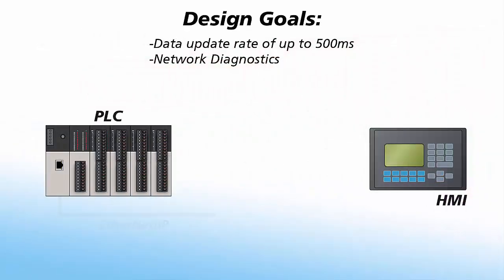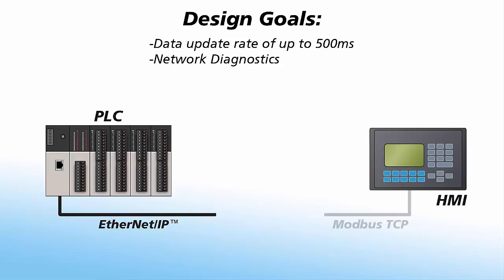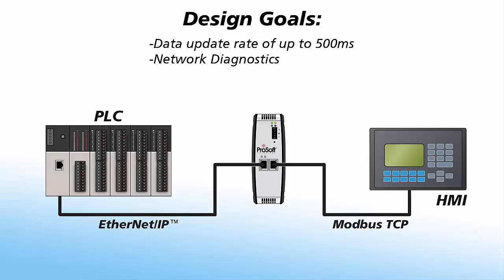We'll begin by taking a look at a PLC that talks EtherNet/IP that needs to communicate with an HMI that talks Modbus TCP. For this example, we'll use a ProSoft gateway to exchange data between the two different protocols. The design goals are to have data communication speeds of no slower than 500 milliseconds and access to the communication diagnostics through the PLC. The HMI is a client, so we'll configure our gateway as a Modbus TCP/IP server. We'll also make the gateway a server on the EtherNet/IP side, meaning we'll need to use message instructions in the PLC program to communicate with our gateway. The client messages from the PLC will be sent with a lower priority, only executing once all the I/O messages have been completed.